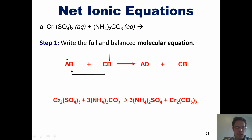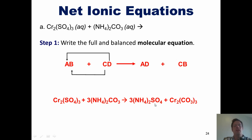Step one says write the full and balanced molecular equation. We remember that in this type of reaction there is a partner swap: cation A gets together with anion D, and cation C gets together with anion B. In this example, chromium is A, sulfate is B, ammonium is C, and carbonate is D. We now do the partner swap: chromium gets together with carbonate, and ammonium gets together with sulfate.